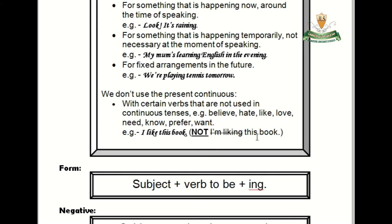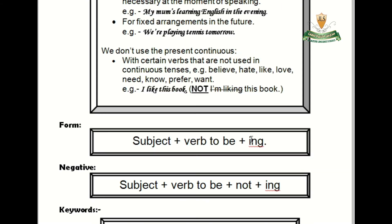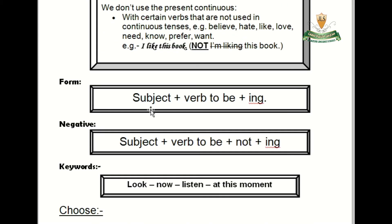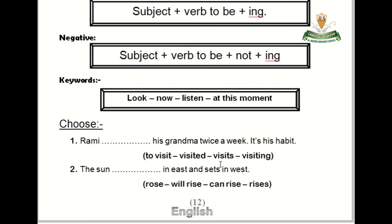The form is: subject plus verb to be plus verb plus -ing. The negative form is: subject plus verb to be plus not, then verb plus -ing. The keywords for present continuous are: look, now, listen, at this moment.